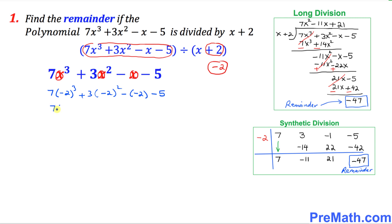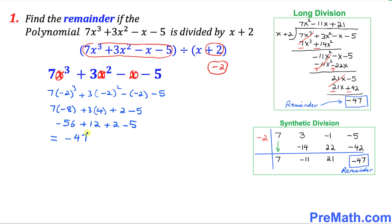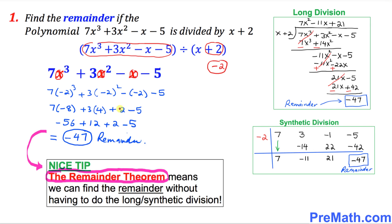Let's simplify it. 7 times (−2)³ is 7 times −8, plus 3 times (−2)² which is positive 4, plus 2 minus 5. That becomes −56 + 12 + 2 − 5, and if you simplify this, that is going to be negative 47 — and that is the remainder as well. This simpler method is called the remainder theorem.